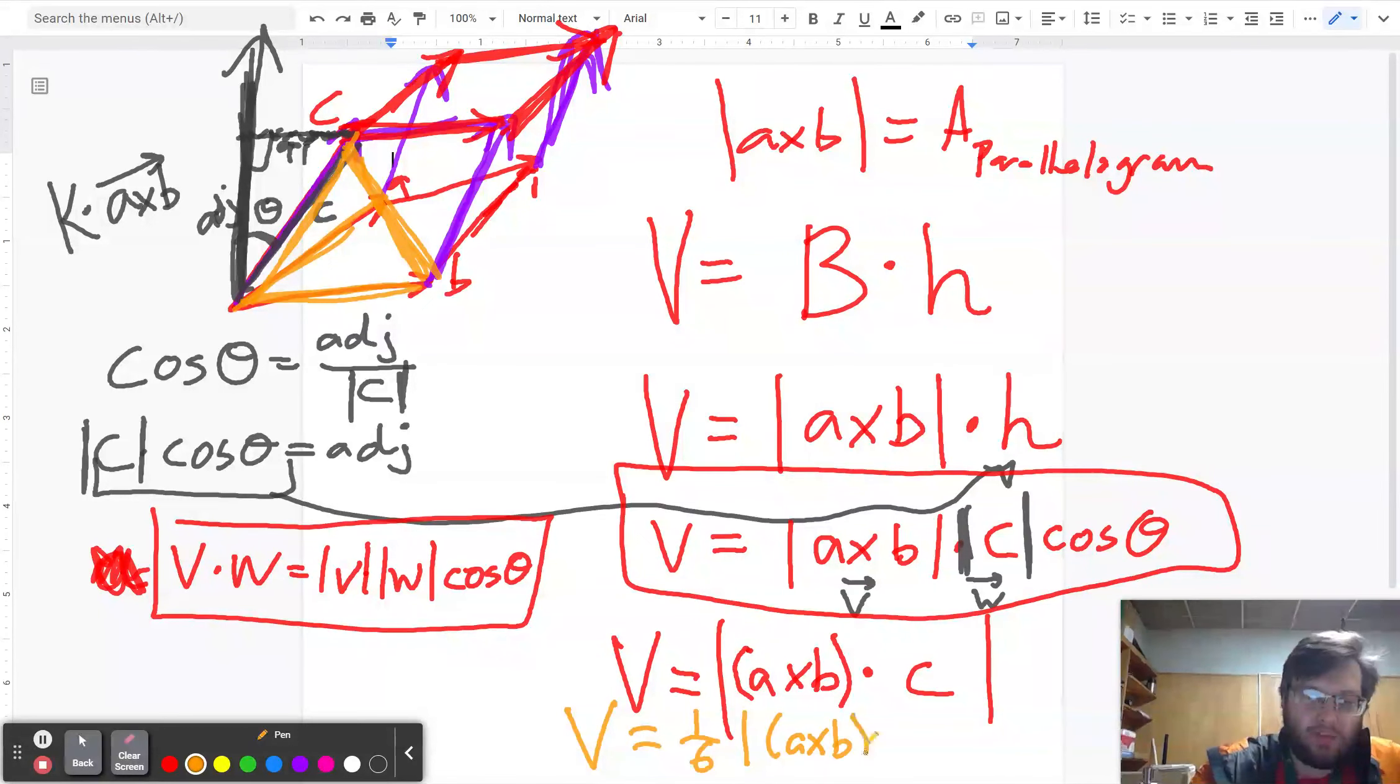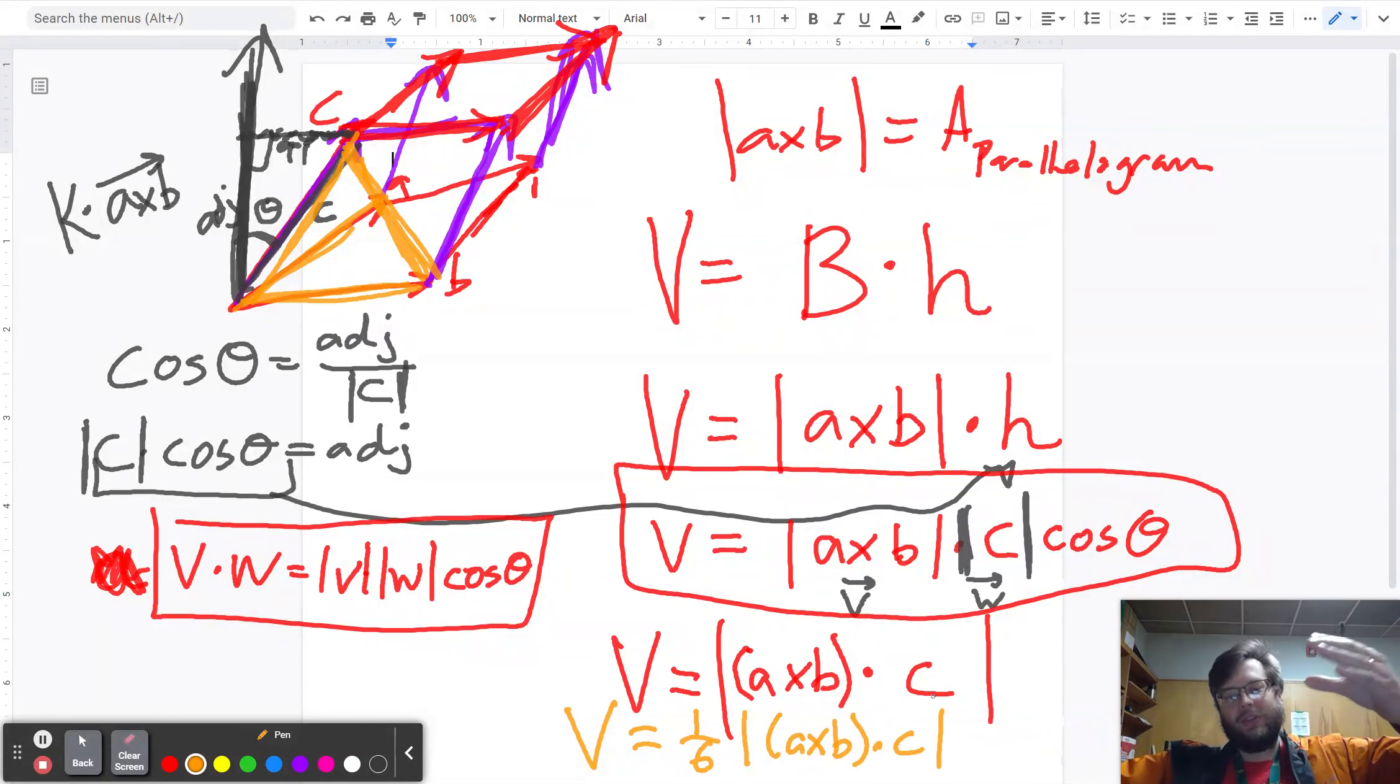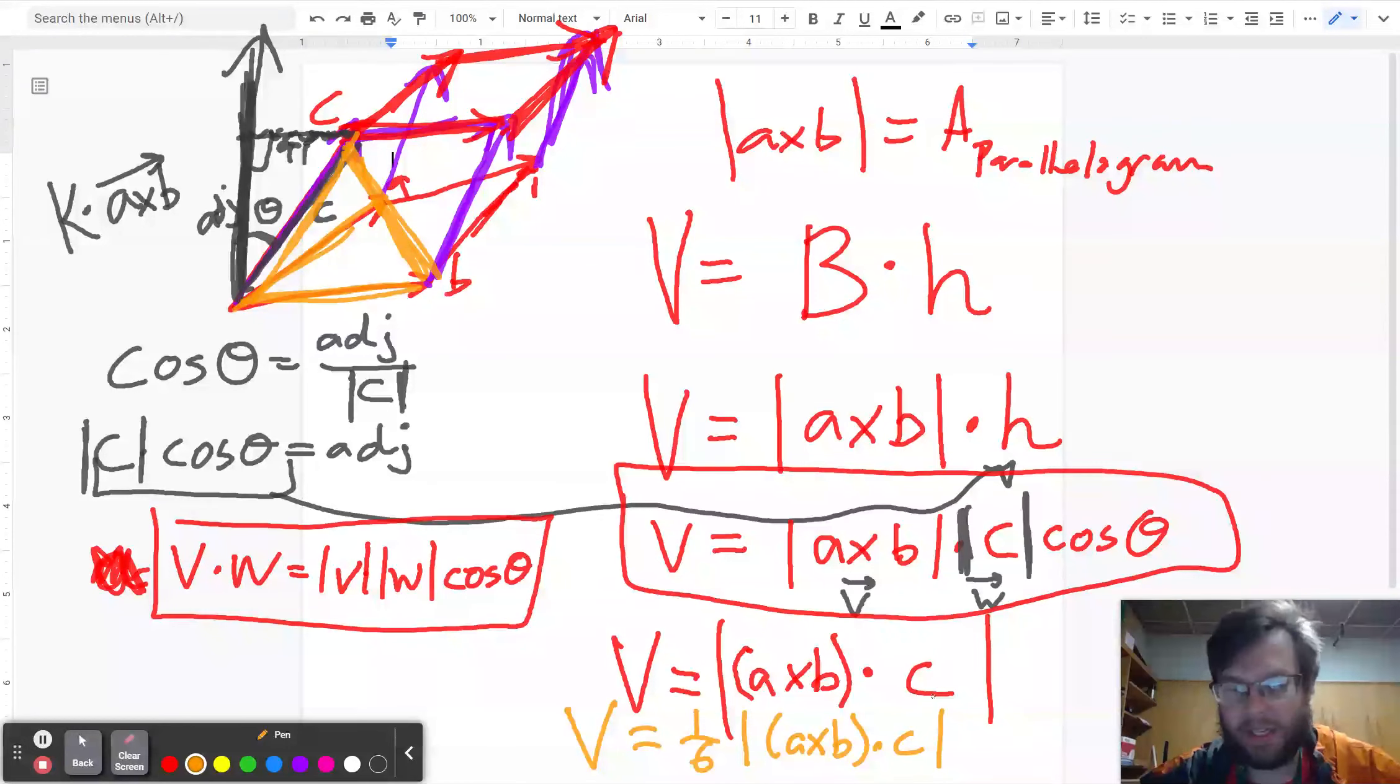Now, you might be curious, okay, where did I get one-sixth from? Think about it for yourself for a second. I took a parallelogram and made it into a triangle. That's half. And then I took a three-dimensional shape that was straight up and down and made it into a pyramid. That's where a third comes from. Half and a third make a sixth. So that's kind of a nice idea.